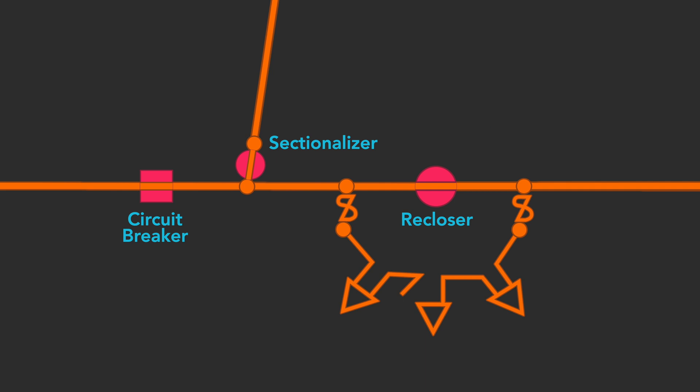For our purposes, a closed circuit breaker, recloser, or sectionalizer is indicated by the color red and a line connecting the circuit. An open unit is indicated by green and a line across the circuit. De-energized lines are dark and energized lines are light. Overcurrents resulting from a fault are indicated by a red X.